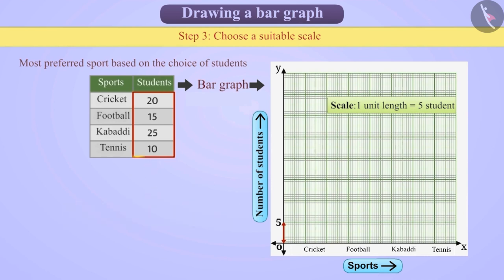Similarly, if the number of students are large, then you can take 1 unit length is equal to 10 students. Remember, the scale provides us with the convenience to draw a bar graph. Since we have taken the scale 1 unit length is equal to 5 students, we mark multiples of 5 along the vertical line to represent the scale as 1 unit length is 5 students.